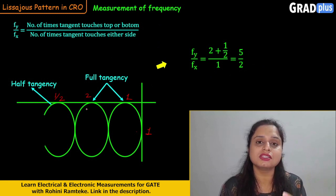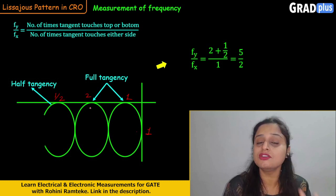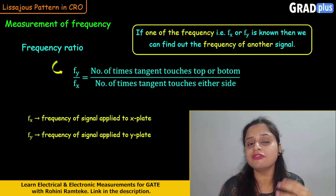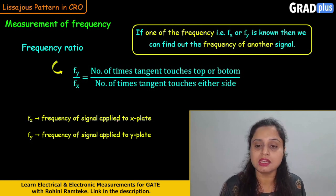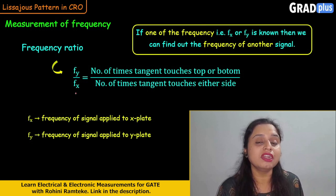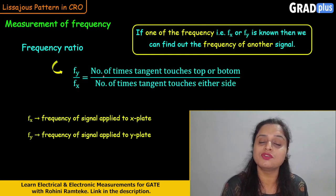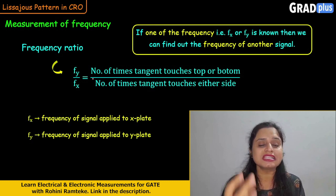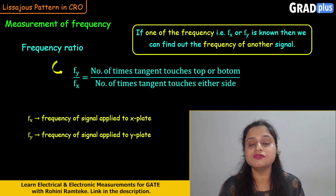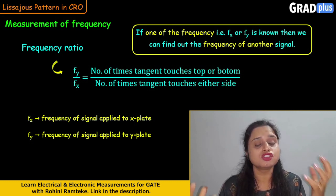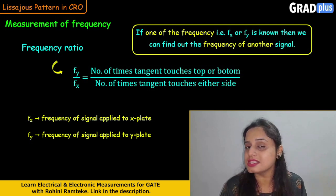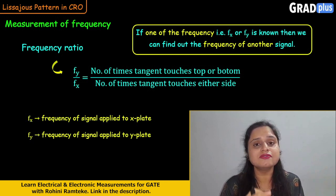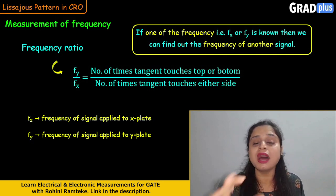If it is a half tangent, we count it as half; if it is a full tangent, we count it as full. From the two frequencies fx and fy, if any one frequency is known we can find the other. If fy is known we can find fx, and if fx is known we can find the frequency for the Y plate signal. In summary, the Lissajous pattern appears because we give sinusoidal waveforms on both plates, and from this pattern we can determine both the phase difference and frequency of the signals.